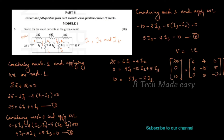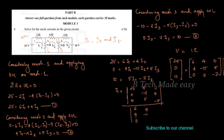Applying Cramer's rule for i1: we replace the first column with [25, 0, 10] and compute the determinant, divided by the determinant of the original coefficient matrix [6, 4, 0; 4, minus15, 5; 0, 5, minus7]. The value of i1 is 3.716.